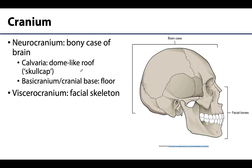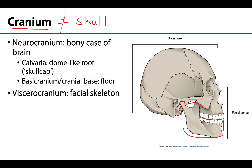The cranium does not equal the skull. The cranium — or crania — is everything but the mandible. When you add the mandible back in to the cranium, then you have the skull. So: skull = cranium + mandible. The mandible is considered part of the facial bones. The facial skeleton is fancily referred to as the viscerocranium, and the neurocranium is the bony case of the brain.